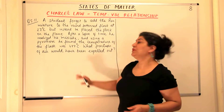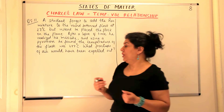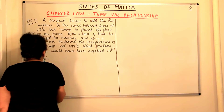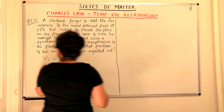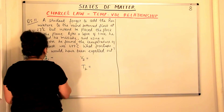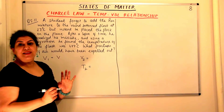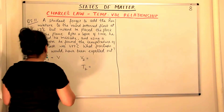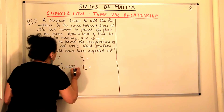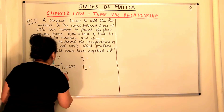So let us start solving this and see what fraction of air would have been expelled out. To use Charles Law we need V1, T1, V2, and T2. The initial volume is the volume of the flask — I write it as V. The initial temperature was 27 degrees Celsius; adding 273 converts it to 300 Kelvin, so T1 is 300 Kelvin. V2 is what we are looking for. The final temperature is 477 degrees Celsius; adding 273 gives 750 Kelvin, so T2 is 750 Kelvin.